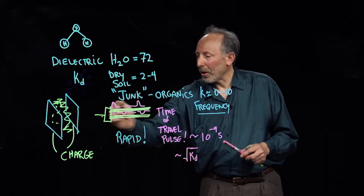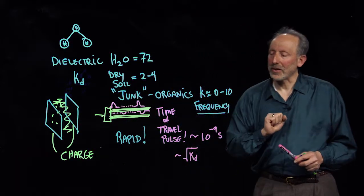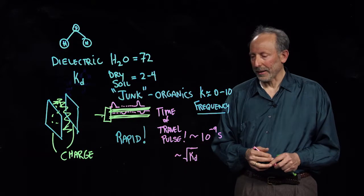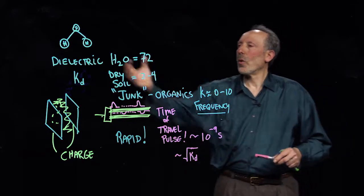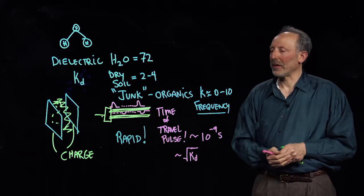It turns out that the time of travel is proportional to the square root of the dielectric. We insert a pulse, see it go down, see it come back to our instrument, and report that amount of time. The longer it takes, the higher the dielectric, because the water has to reorient and that slows the movement of the electric signal down.